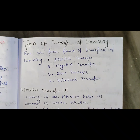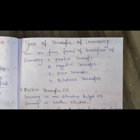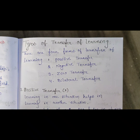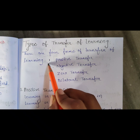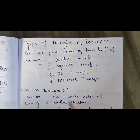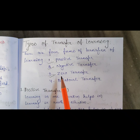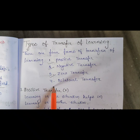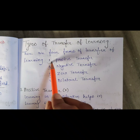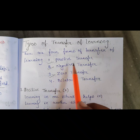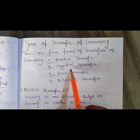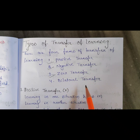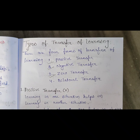Now we will see the types of transfer of learning. There are mainly three types, but we will see four here. The first three are most important: positive transfer, negative transfer, zero transfer, and bilateral transfer.